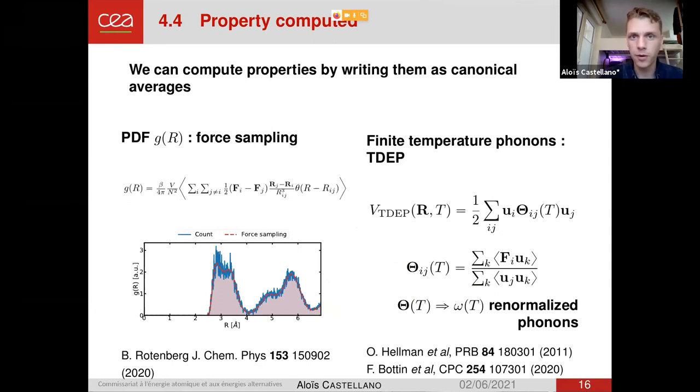Then finally, before going to some examples, some words on the properties we can compute. In the end, we can compute any properties that can be written as a static canonical average. And for the example, I will focus on the pair distribution function. I will use a method that is called force sampling. It's not really important. It's just a low variance method to compute the PDF. And also on finite temperature phonons with temperature-dependent effective potential method. Again, I will not go into much detail for this method because you will have a presentation on this on Friday. The important thing is that we compute an effective interatomic force constant matrix, temperature-dependent, which can be computed as a canonical average of forces and displacement. With those force constants, we can obtain temperature-dependent phonons. So phonons that are renormalized by the interesting effect of temperature.